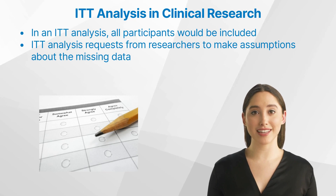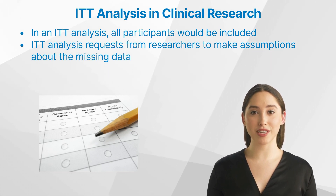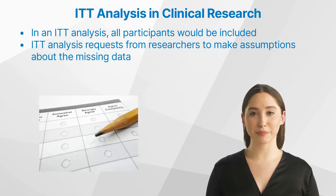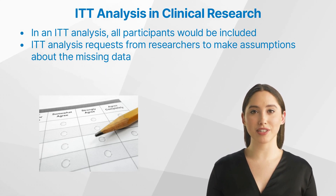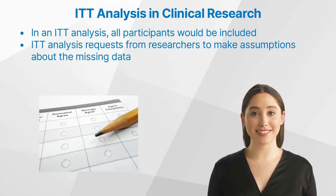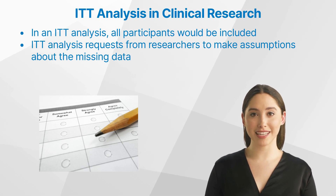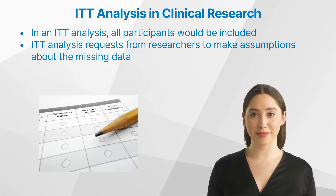As an example, consider a study that compares two treatments for depression. At the end of the study, participants are asked to complete a survey to measure their depression levels. In an ITT analysis, all participants, even those who have dropped out of the study, would be included in the analysis and their results would be compared based on their assigned treatment group.